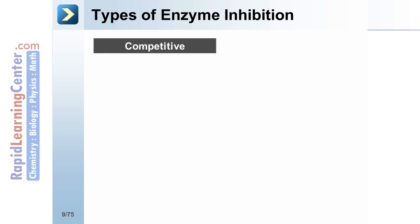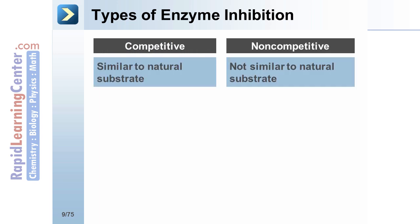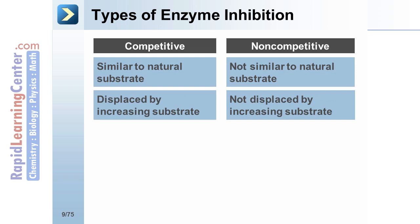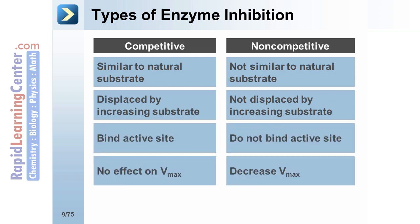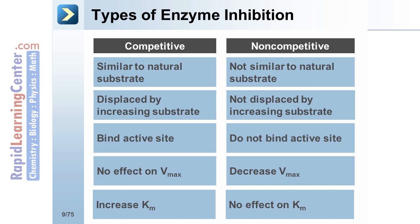Enzyme inhibitors may be competitive or non-competitive. Competition refers to competition between the normal substrate for the enzyme and the inhibitor in question. Competitive inhibitors will be similar to the natural substrate, may be displaced by increasing concentrations of substrate, and will bind the active site of enzymes. They have no effect on Vmax, but they will increase Km.